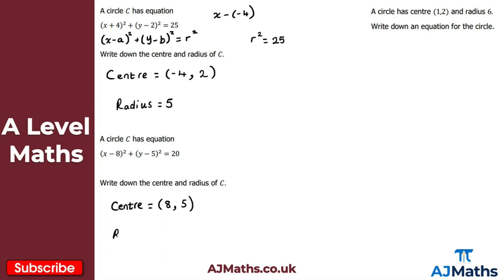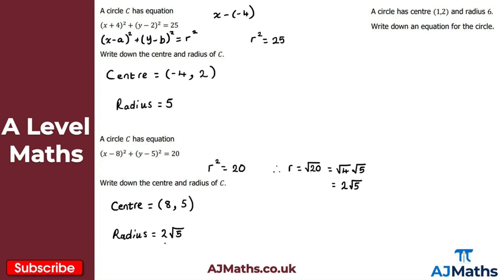For the radius, we have r squared equal to 20. Taking the square root gives us the square root of 20. We can write that as the square root of 4 times the square root of 5, and the square root of 4 is 2, so we get 2 root 5. The radius is 2 root 5 — though the square root of 20 is also perfectly fine if simplification isn't required.